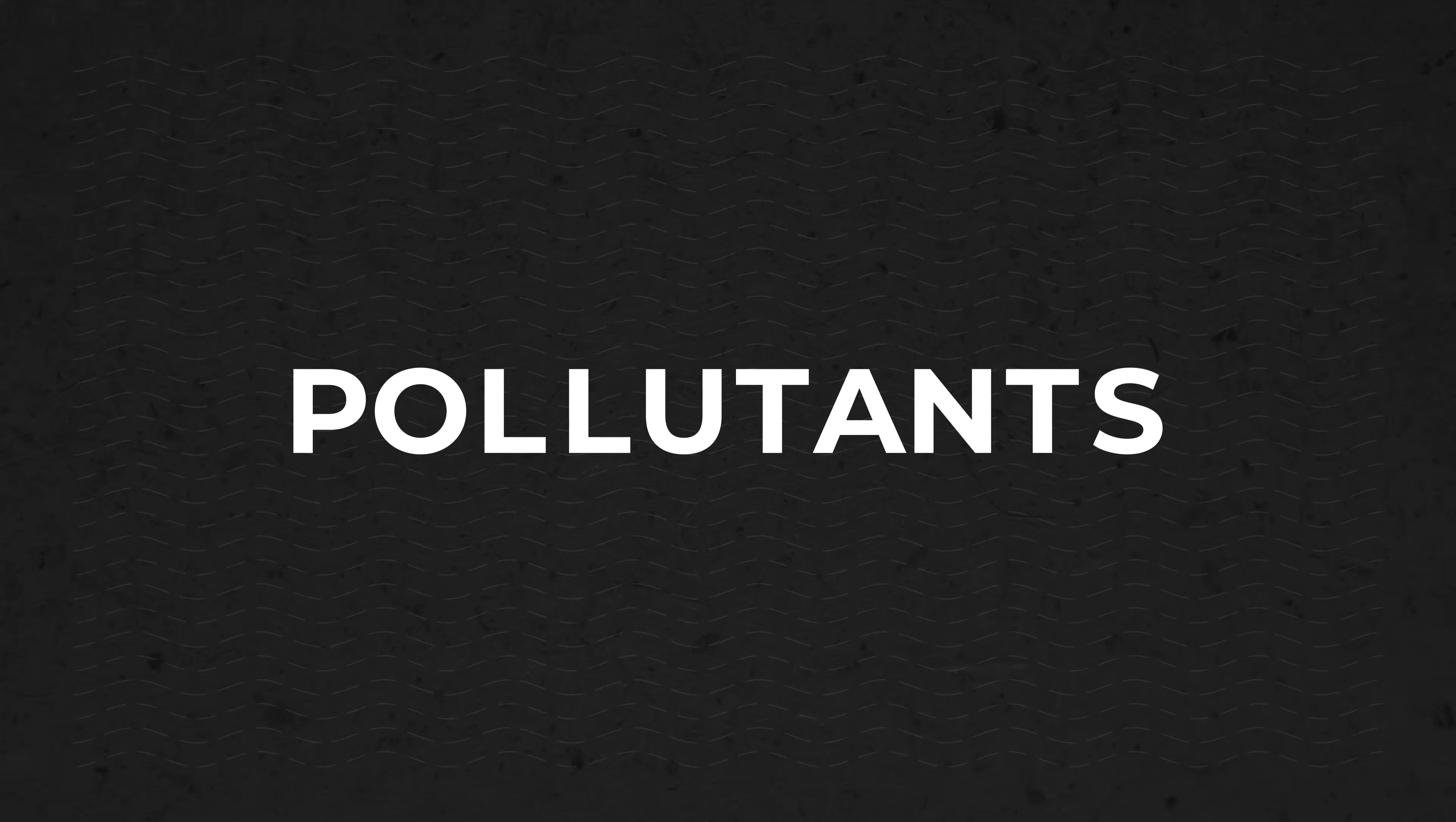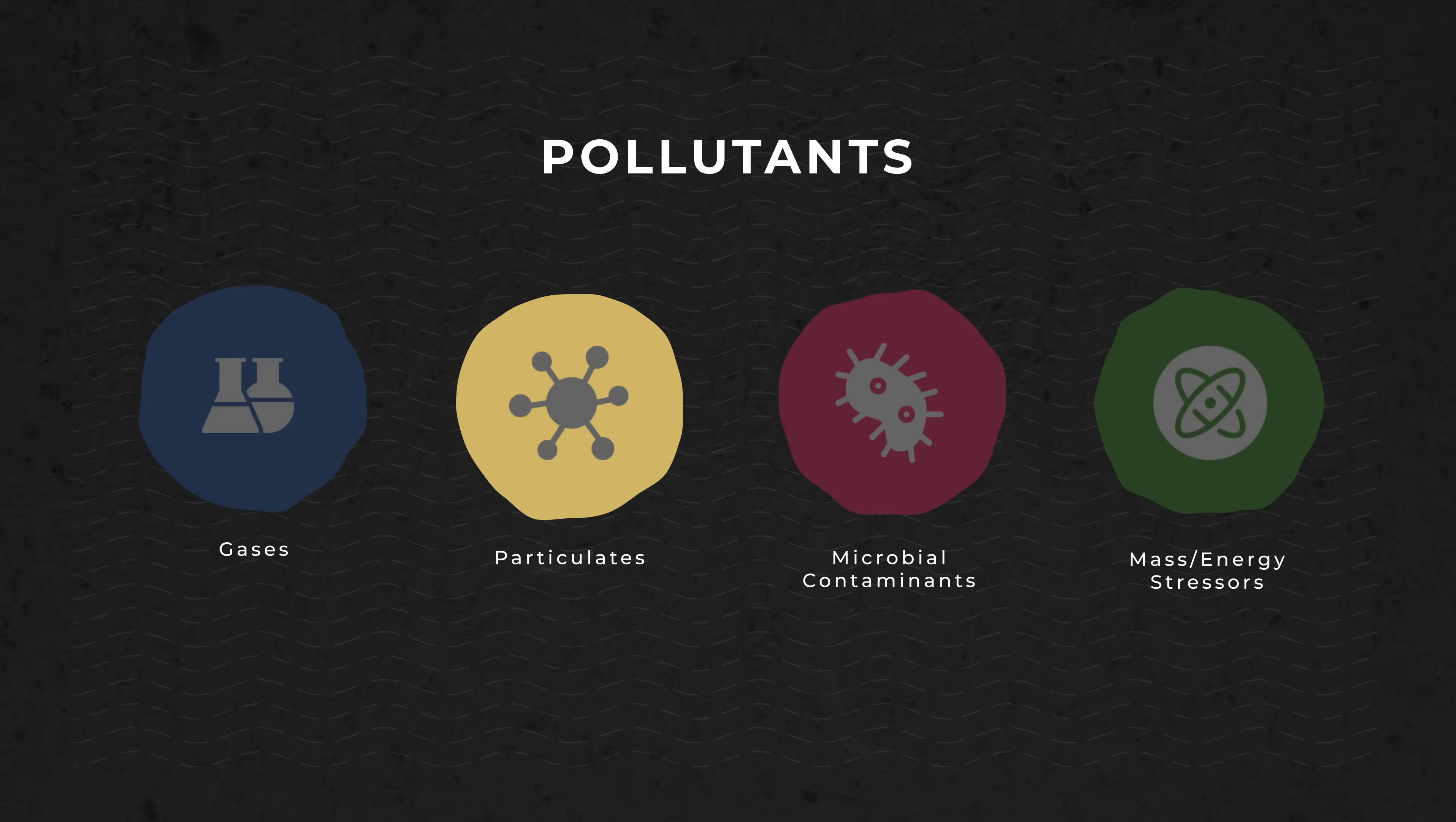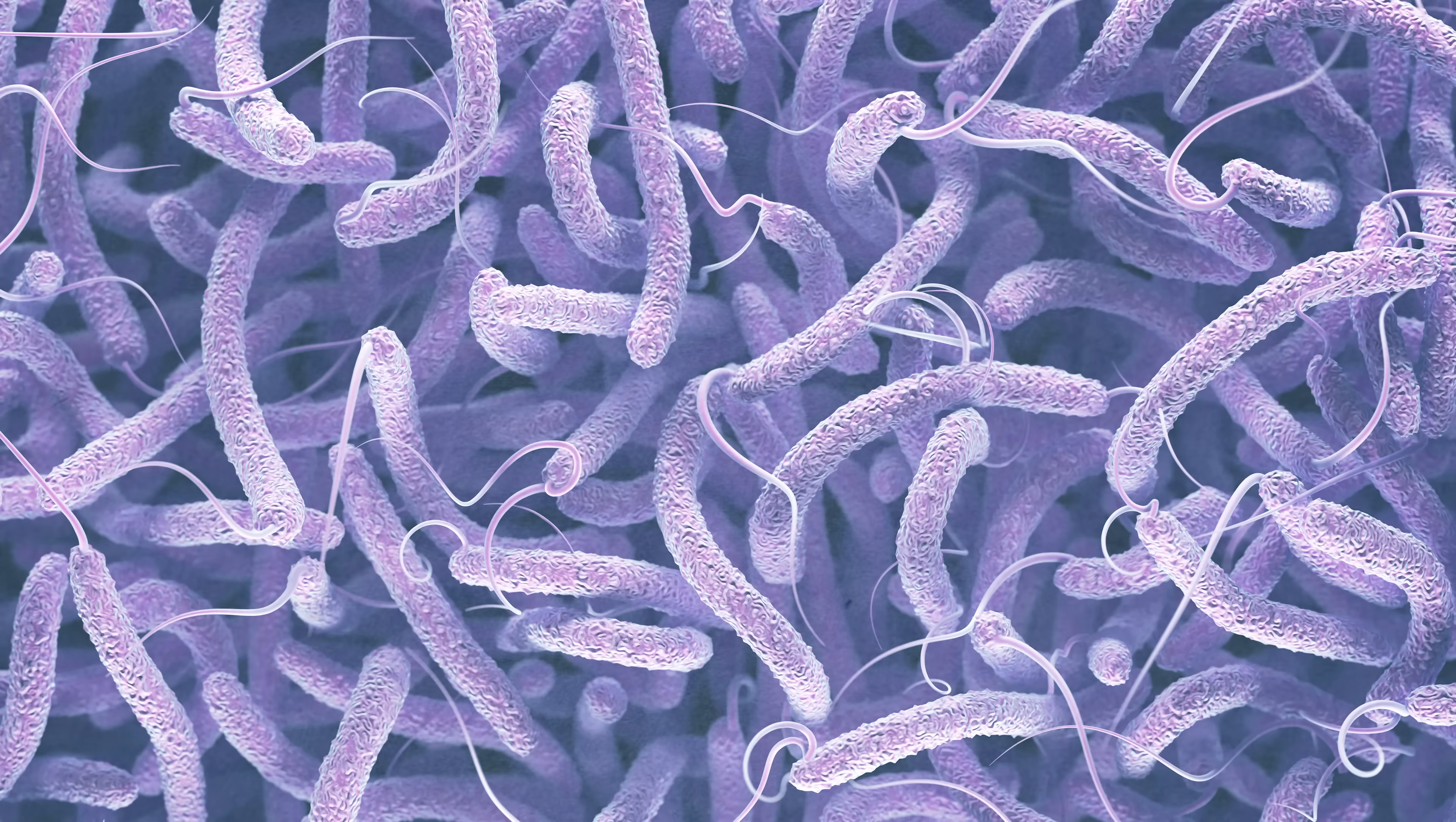These pollutants can be categorized into four groups: gases, particulates, microbial contaminants, and mass or energy stressors. These groups of pollutants include toxins that we have all heard of, like carbon monoxide, asbestos, mold, and bacteria, to name a few.